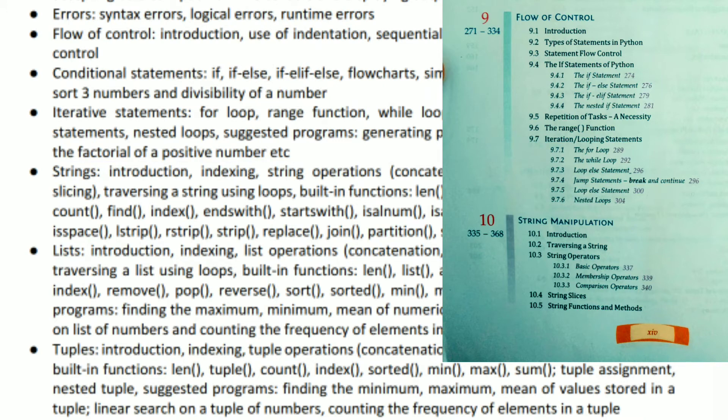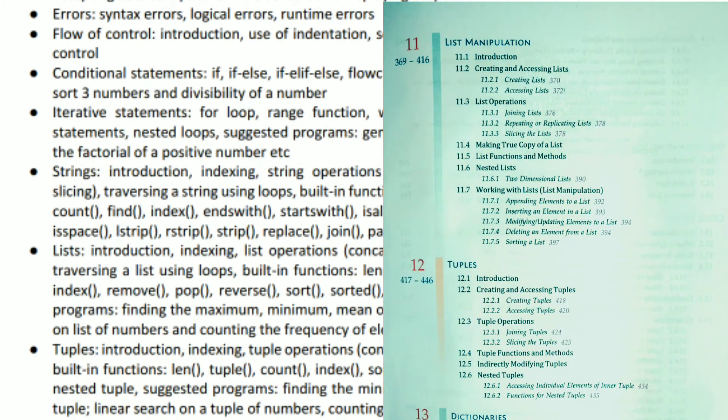Coming to next, that is strings. Strings—we have a complete chapter, quite very important, and this chapter is available in your book, that is chapter number 10, String Manipulation. After this, we are having two more chapters like lists and tuples. Lists and tuples are also having their own chapters. In chapter number 11, you will be getting lists, and then in the next chapter, that is tuples, we will be getting all details in chapter number 12.